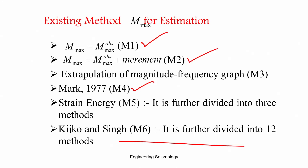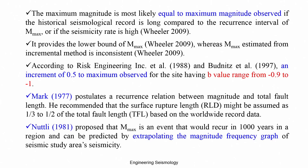The maximum magnitude is most likely equal to the maximum magnitude observed — the M1 method — if the historical seismicity record is long compared to the recurrence interval of Mmax, or if the seismicity rate is high. For example, if there is a 200-year return period earthquake but 1000 years of data, then the observed magnitude will be close to Mmax. But this scenario does not exist in most regions of the world, so one must be very cautious using this approach.